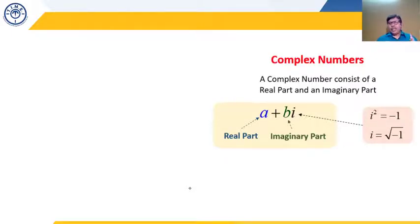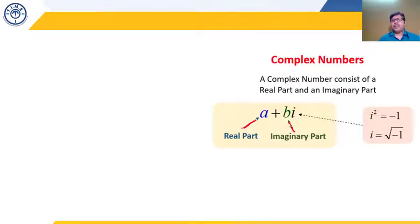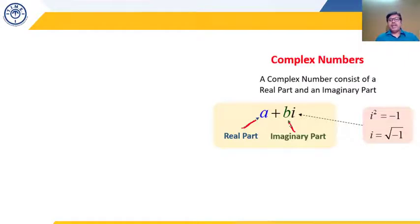A complex number consists of two parts: one is the real part and the second is the imaginary part. All the purely imaginary numbers we discussed were of the form i√a. The standard form is a + ib, where a is the real part and b is the imaginary part, and i = √(−1) with i² = −1. If the real part is 0, the number is purely imaginary. If the imaginary part is 0, the number is purely real.